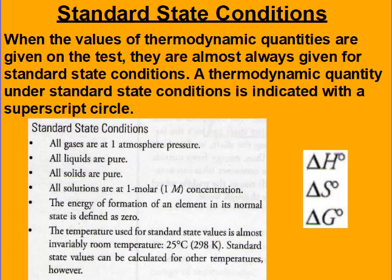A thermodynamic quantity under standard state conditions is indicated with a superscript circle, which you'll see right here. For standard state conditions, gases are going to be at 1 atm, liquids will be pure, solids are pure, and solutions are 1 molar concentration.